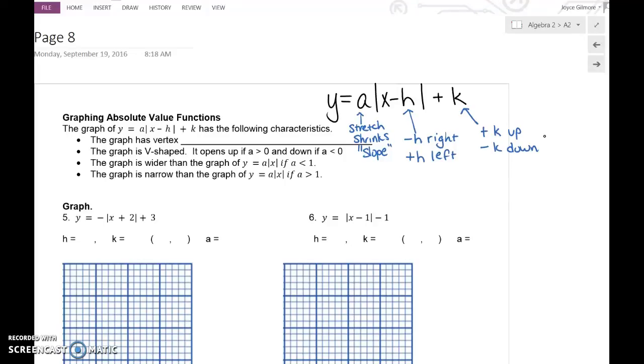The vertex of this graph is the point h, k. Now remember, because h is in the formula after a minus sign, if the function says x plus 2, like number 5 does, that actually means in this function it was x minus a negative 2. So your h value is actually negative 2.